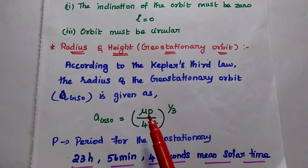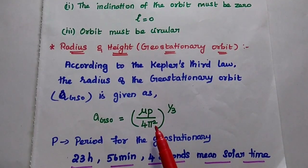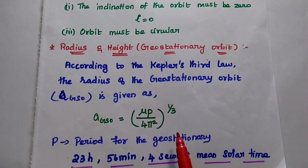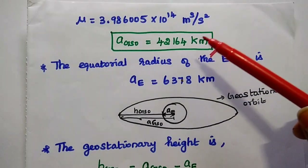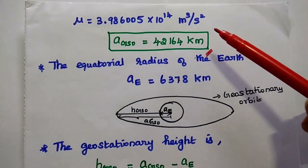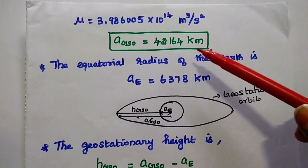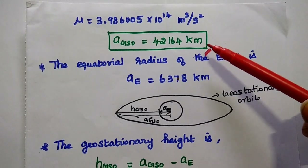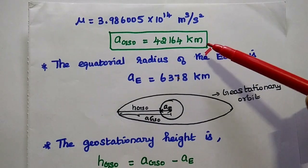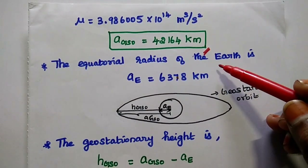The value of mu is 3.986005 times 10 to the power 14 meter cubed per second squared. Substituting the values of P and mu into Kepler's third law, we get the radius of the geostationary orbit as 42,164 kilometers.